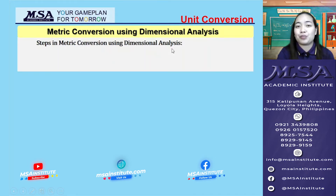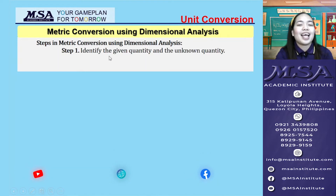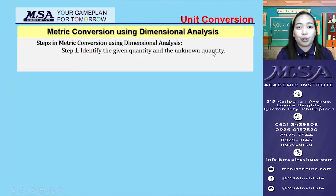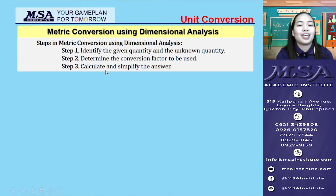Now let's take a look at the steps for conversion. Step 1: identify the given quantity and the unknown quantity. Step 2: determine the conversion factor to be used. Step 3: calculate and simplify the answer.